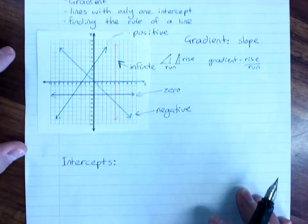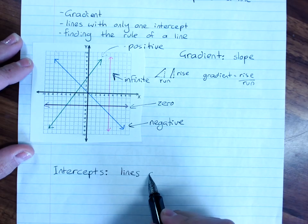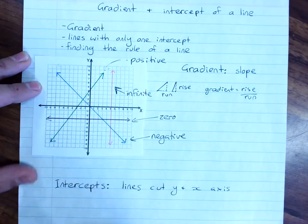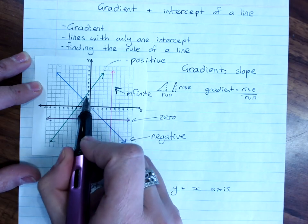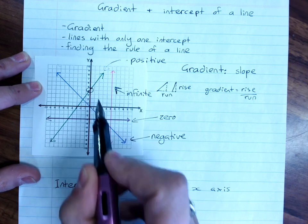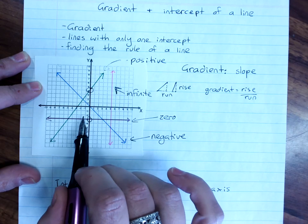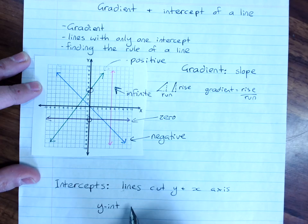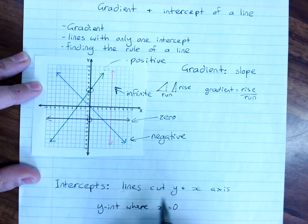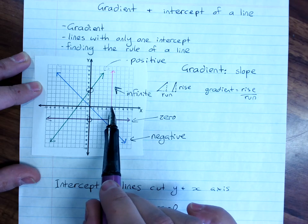Now, intercepts. Intercepts are the point at which the lines cut the y and x-axis. We'll usually be dealing with the y-intercept. For example, the y-intercept here is 4, or (0, 4). And the y-intercept here is negative 3, or (0, -3). It's worth noting that the y-intercept is always where x equals 0. And the x-intercept is where the line cuts the x-axis.